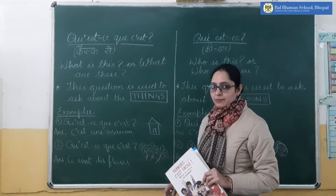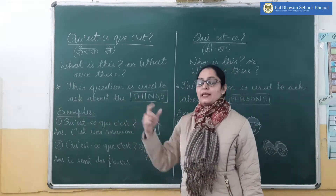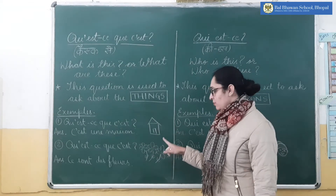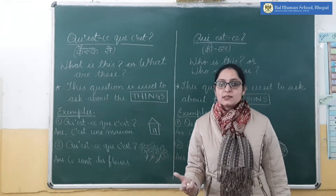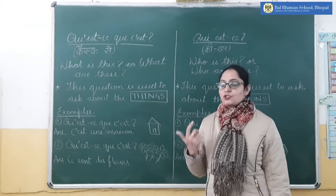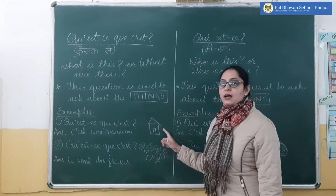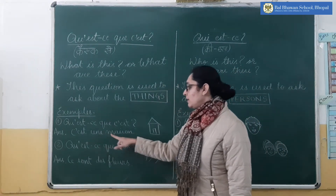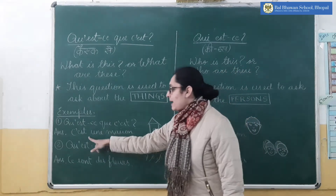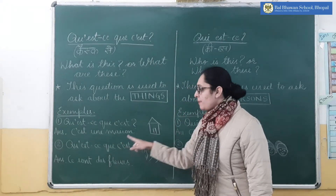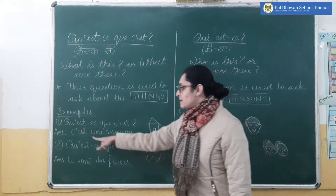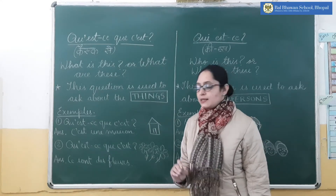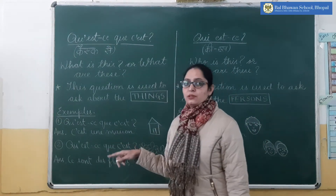I have written two examples here. Number one, I have made a small house. So what is this? It means 'Keskse'. So the answer will be 'this is a house' — 'C'est une maison'. So 'c'est' means 'this is' and 'maison' means 'a house'.